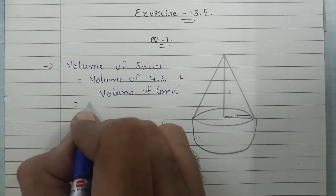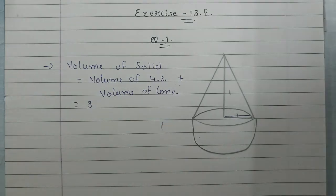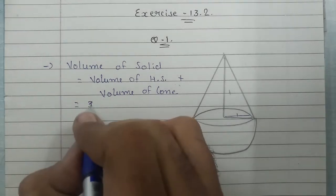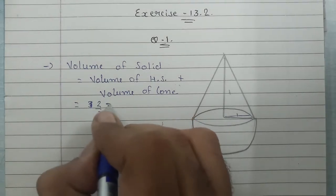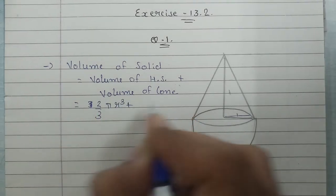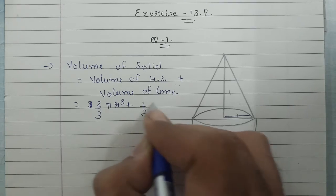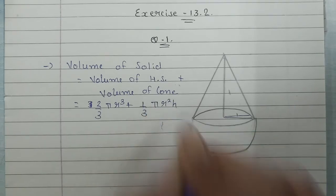Now the hemisphere volume formula is 2 by 3 pi r cubed, and for the cone it's 1 by 3 pi r squared h.